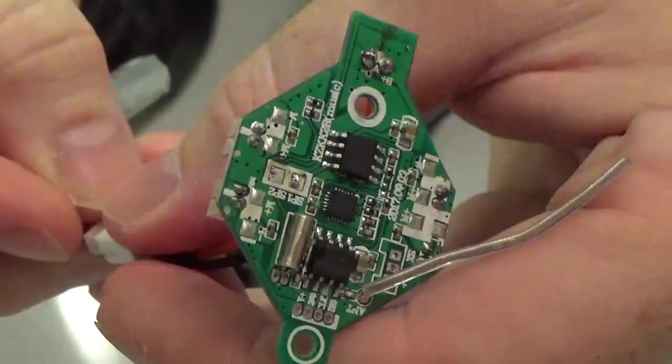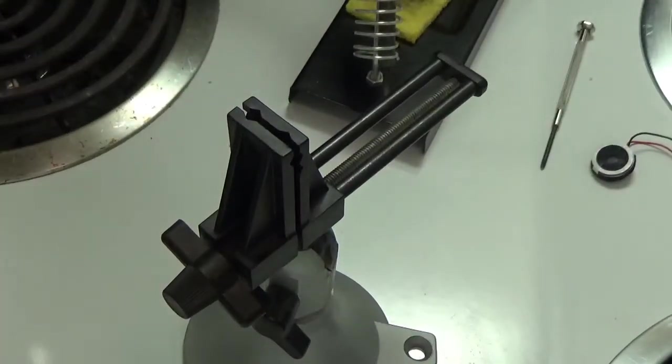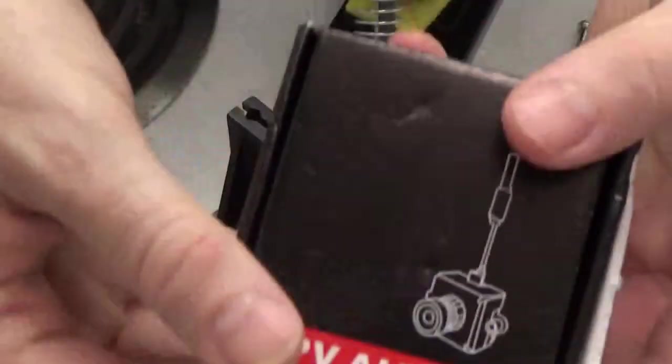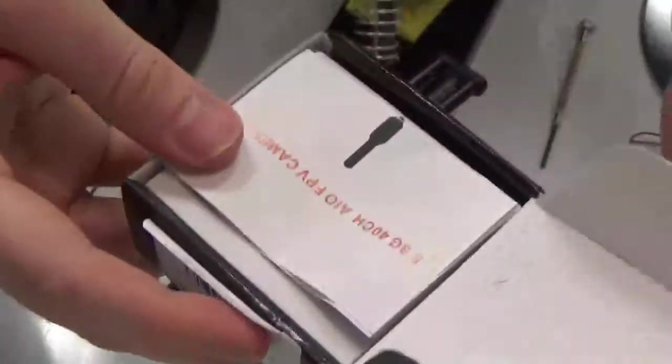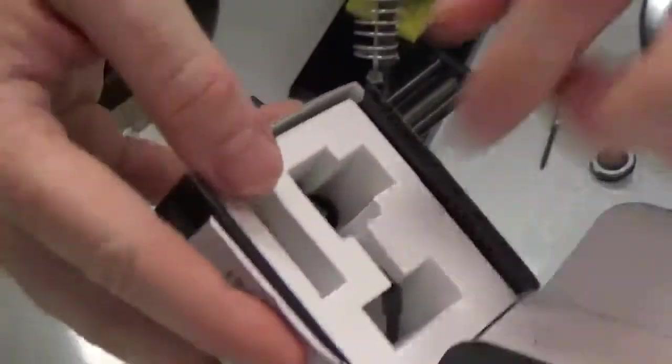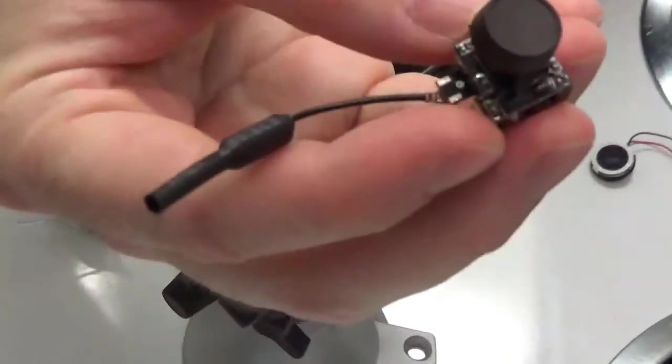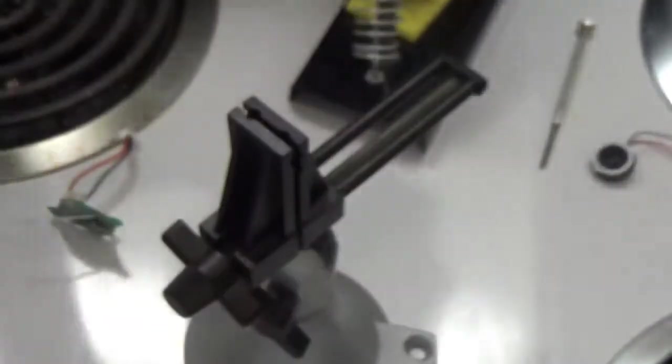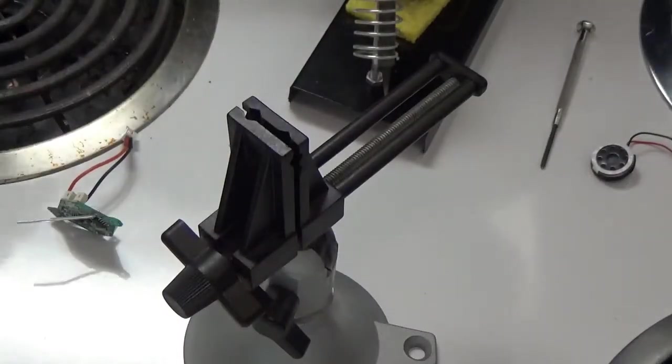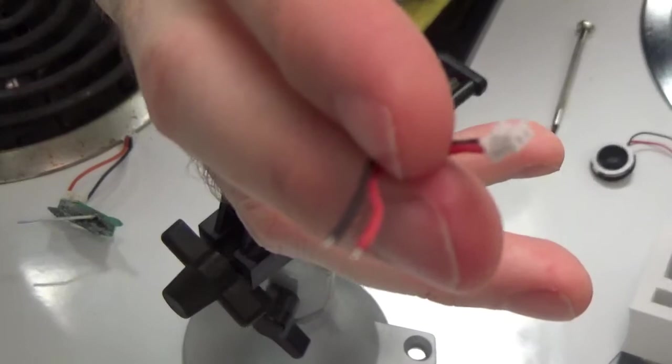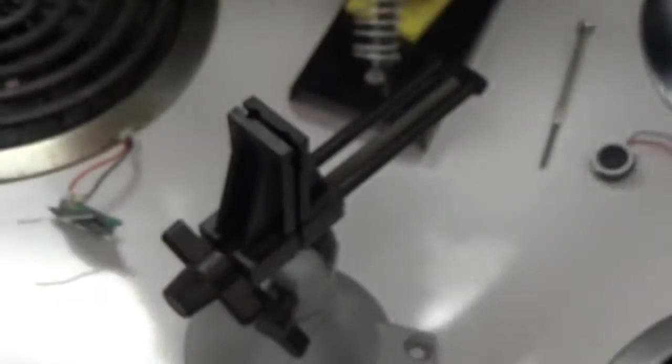Very good. Now with the power lead soldered in, the next thing we want to solder is the socket that will connect the FPV camera. We haven't even opened this little critter up yet. Let's get this little dog out here—our little FPV cam.